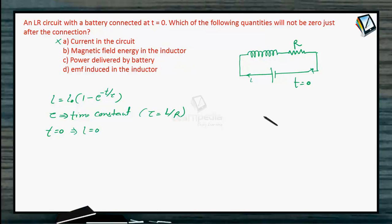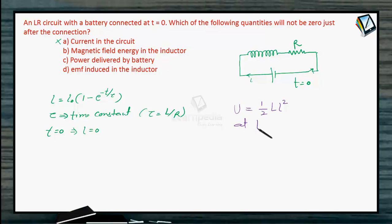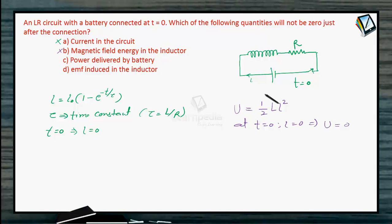Option B: magnetic field energy in the inductor. The magnetic field energy U is represented as ½LI². Since this energy is clearly dependent on the current, and current is 0 at T = 0, the energy stored will also be 0. So this option is also not correct, because it equals 0.